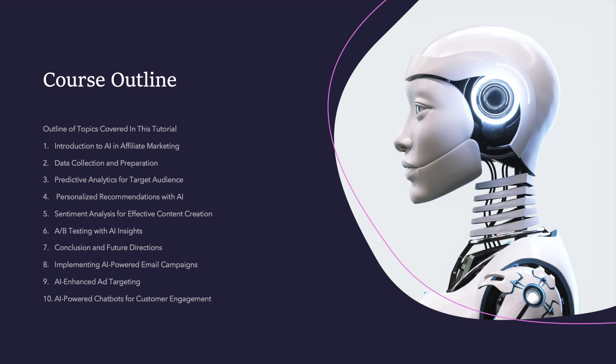The first topic is Introduction to AI in Affiliate Marketing — a brief overview of affiliate marketing, its challenges, and an introduction to AI and its potential for optimizing marketing strategies. The second topic is Data Collection and Preparation — how to gather affiliate marketing data like click-through rates and conversion rates, and how to clean and preprocess that data.